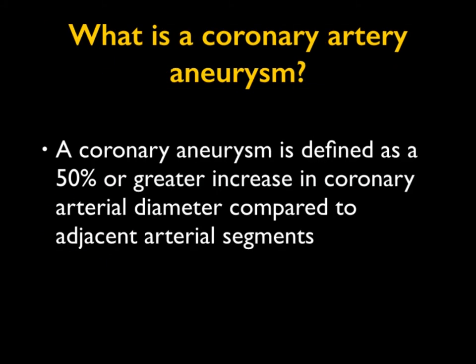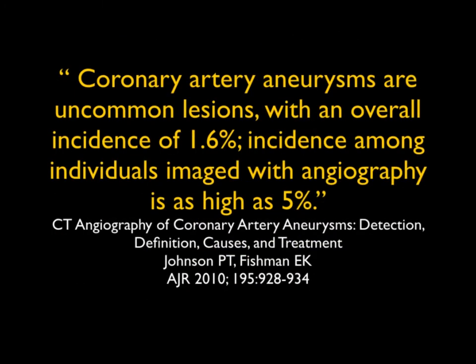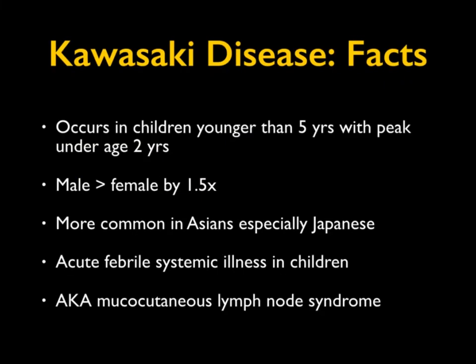A coronary artery aneurysm is defined as a 50% or greater increase in the coronary artery diameter compared to adjacent segments. The most commonly involved vessel is the right coronary, number one, followed by LAD and circumflex. They're uncommon lesions — people talk about an incidence of under 2%, but with angiography it may be as high as 5%. For Kawasaki's specifically, these are young patients — not a 70-year-old. Peak age is 2, under 5 years old, male greater than female, more common in Asians, especially Japanese.